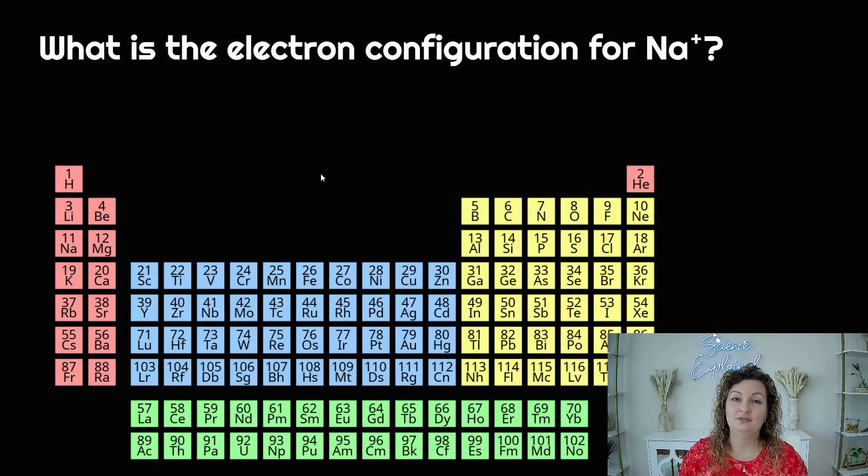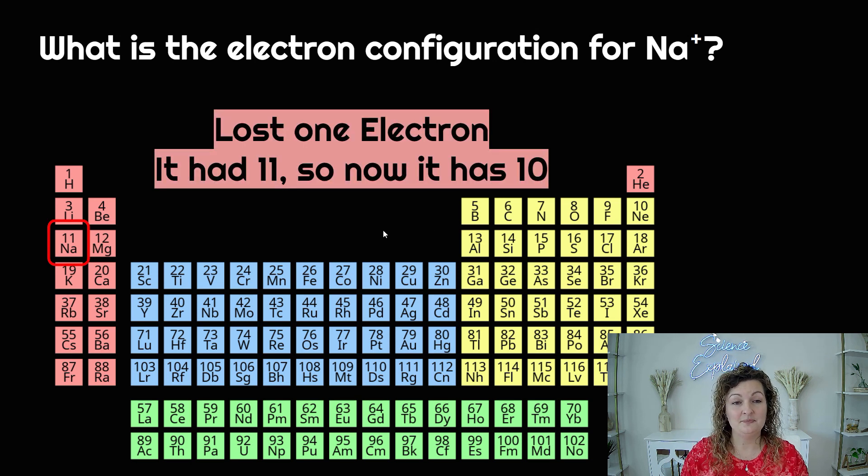So what is the electron configuration for Na+? That plus is really just representing a positive one charge, so it is a cation which means that we lost one of our electrons. If we look for Na, which is sodium right here, it had 11 electrons. I know that because electrons and protons are going to be equal to one another in a neutral atom. However, this is an ion and it's positively one charge, so it lost one of those 11 and so now it's going to have 10. So I had 11, gave one away, and so now it has 10.